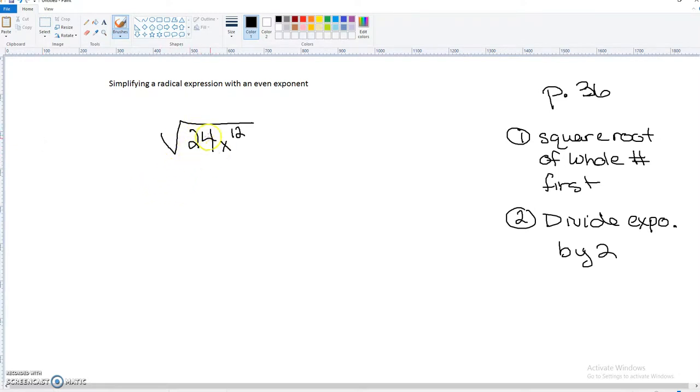We need to find the two factors, one having a perfect square or being a perfect square in order to simplify this. So factors of 24, I know, are 4 times 6, and 4 being that perfect square.